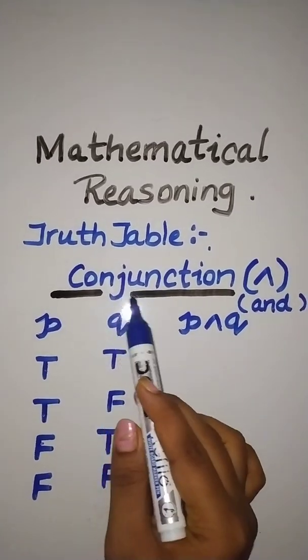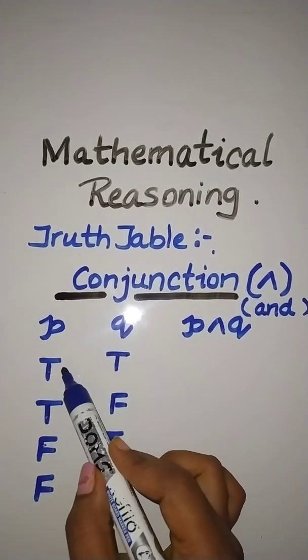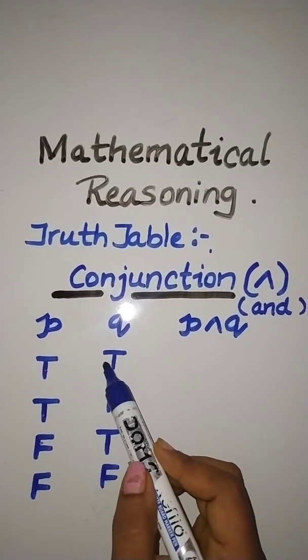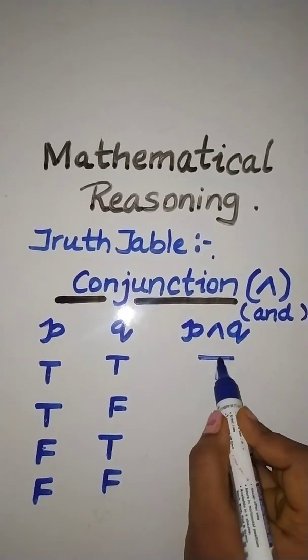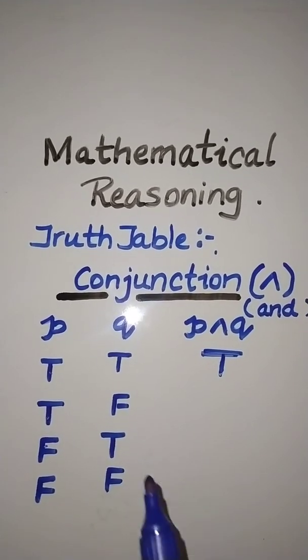Now in conjunction, what happens is if both the conditions are true, then P and Q will be true. Otherwise in all other conditions it will be false.